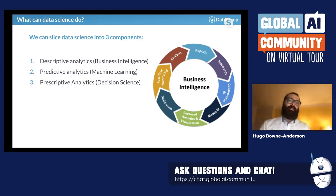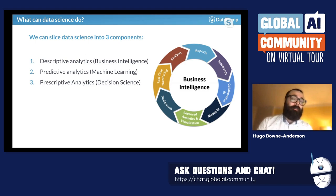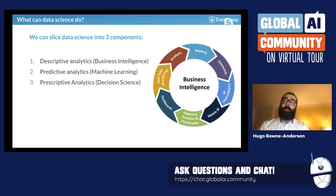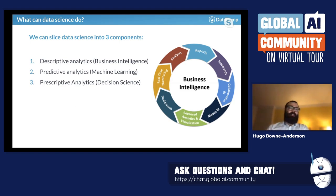What can data science do? One useful way is slicing it into three components: descriptive analytics, predictive analytics, and prescriptive analytics. Descriptive analytics is essentially BI — business intelligence — getting the right data into the hands of the right people, in the form of dashboards, reports, visualizations, emails. Then there's predictive analytics, which is the realm of machine learning. And then prescriptive analytics, which is decision science and the decision function.